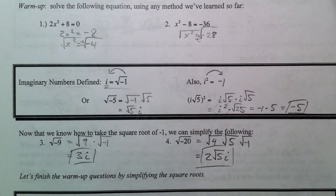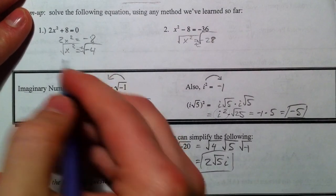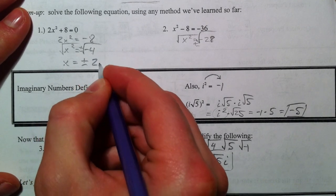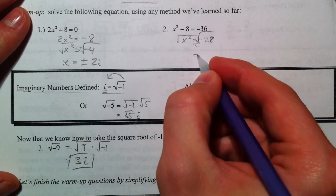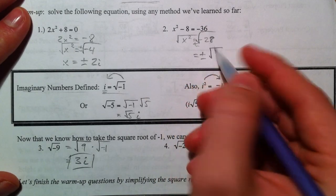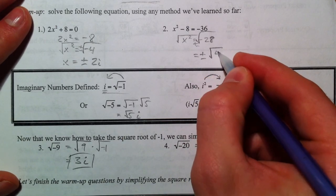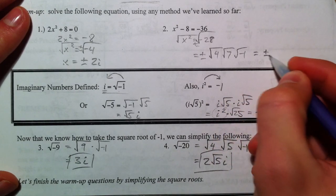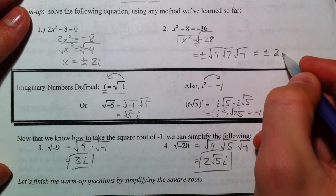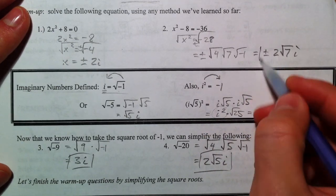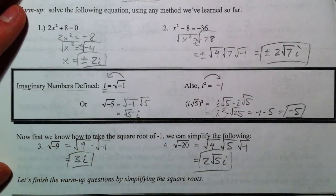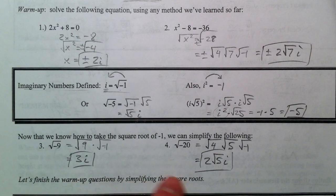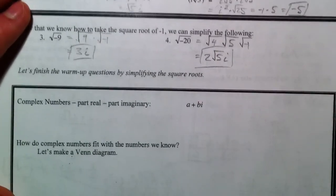Let's finish the warm-up problems. We had plus or minus the square root of negative 4, so that is plus or minus 2i. And over here, plus or minus the square root of negative 28 — think 4 times 7 times negative 1 — so that's plus or minus 2i√7. Notice we get plus or minus when solving an equation because we take the square root of both sides, but not when we're just taking a square root with no equation.